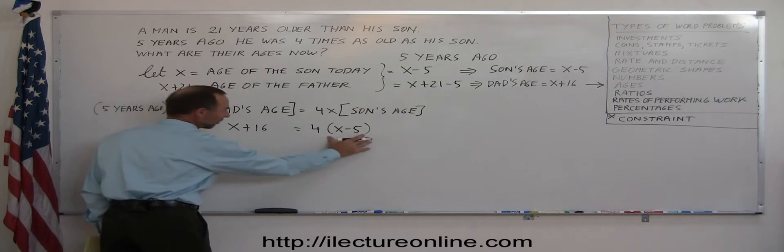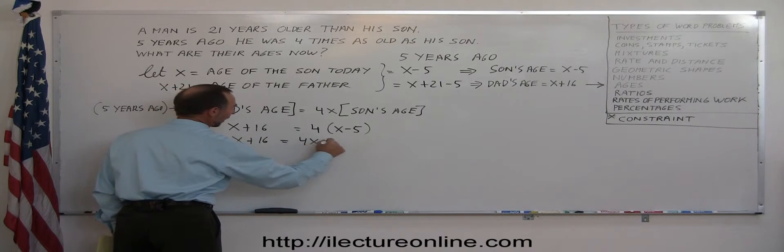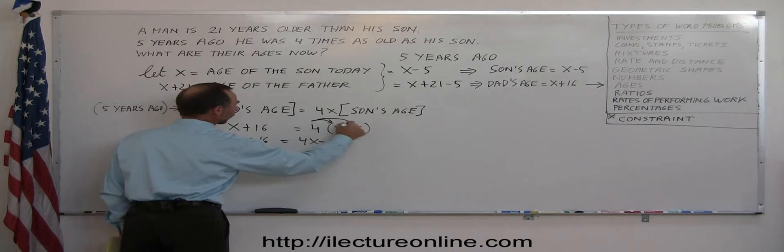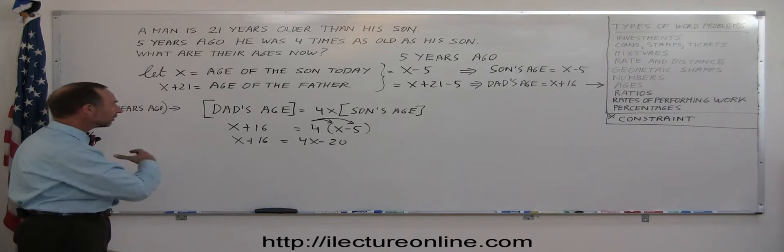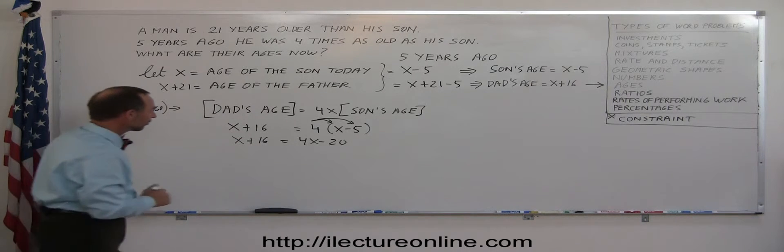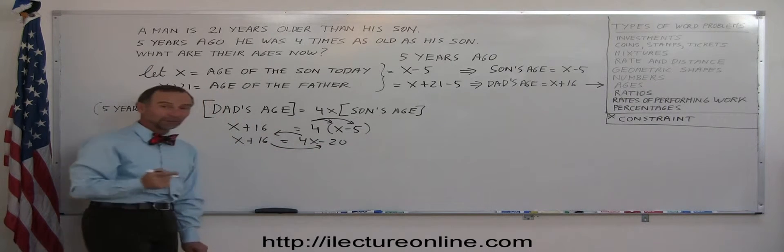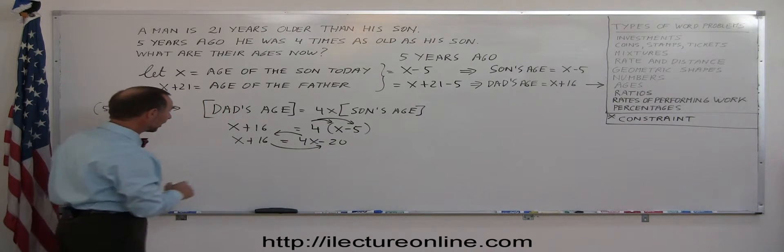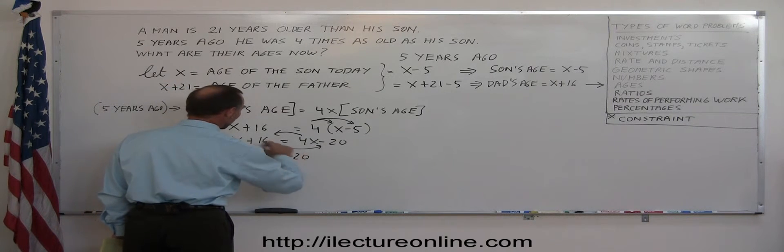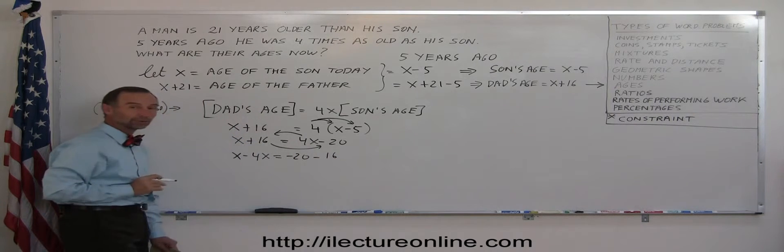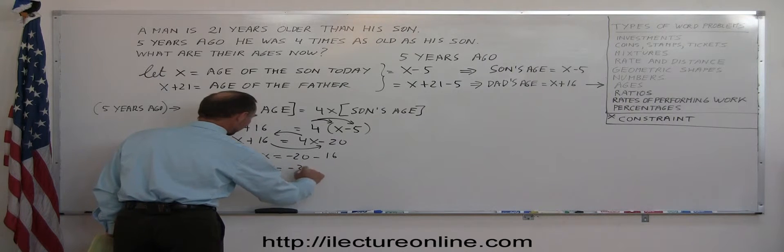First thing we want to get rid of the parentheses. So we have x plus 16 equals 4x minus 20. Remember, we distribute the four over both terms inside the parentheses. Now we move all the variables to one side, all the numbers to the other side. So moving the 4x over here and the 16 that way. And remember, when we cross the equal sign, we want to change the sign. So we have x minus 4x equals minus 20 minus 16. Combine like terms on both sides of the equation. So minus 3x equals minus 36.